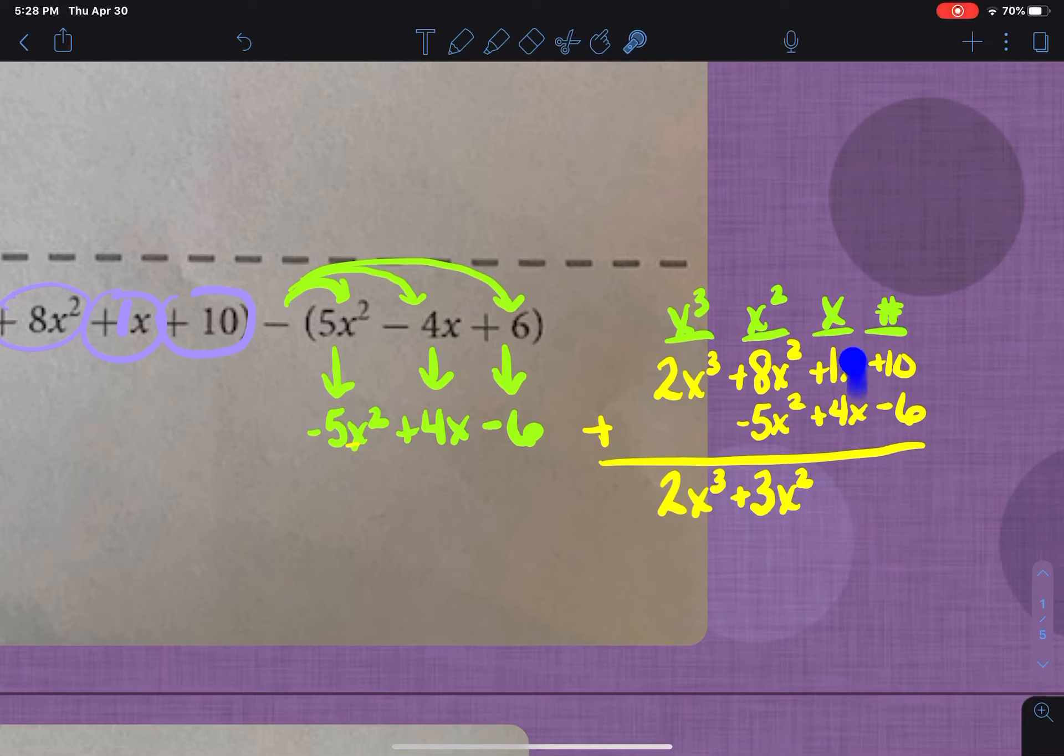is going to be positive 3. So positive 3x squared. On this one, 1x and 4x both being positive is going to be 5x and then 10 plus negative 6 is going to be positive 4.